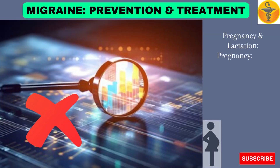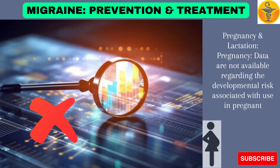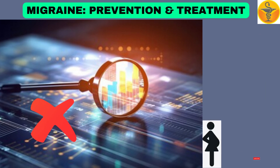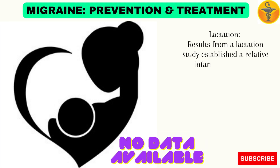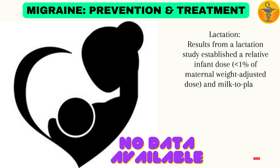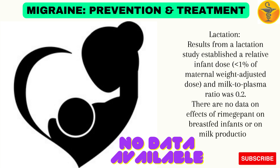Pregnancy and Lactation — Pregnancy: Data are not available regarding the developmental risk associated with use in pregnant women. Lactation: Results from a lactation study established a relative infant dose of less than 1% of maternal weight-adjusted dose, and milk-to-plasma ratio was 0.2. There are no data on effects of Rimegepant on breastfed infants or on milk production.